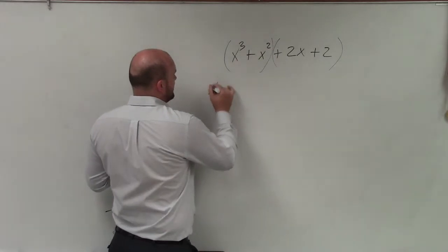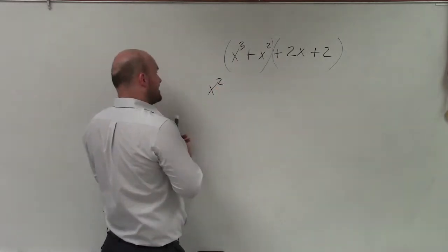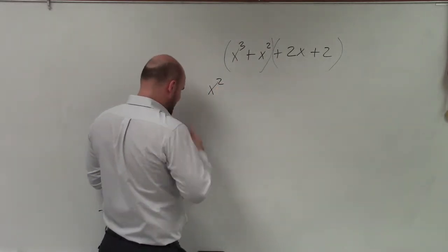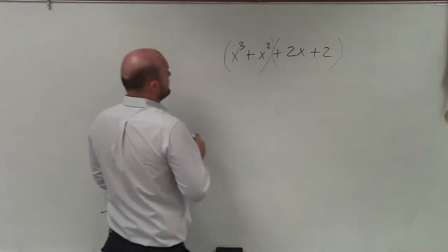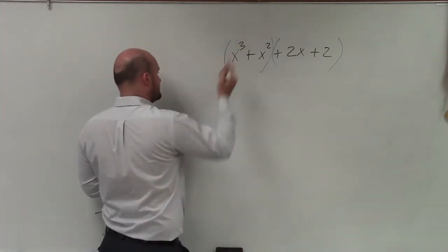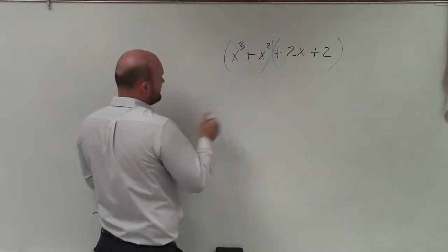So I go ahead and factor out an x squared. And when I factor out an x squared, let's kind of break this down. Let's look at it. Why can we factor out an x squared?